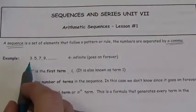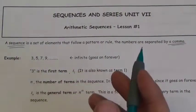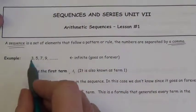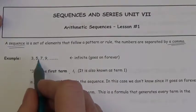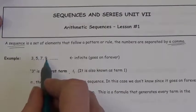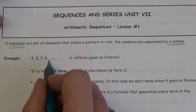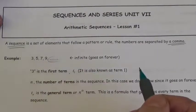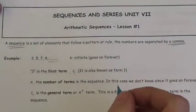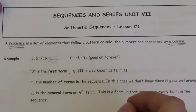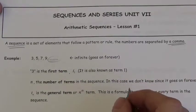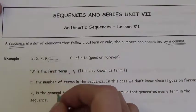For example, a numeric sequence here: 3, 5, 7, 9. And then we've got this ellipsis — the dot dot dot — that means it goes on forever. This is an infinite sequence.